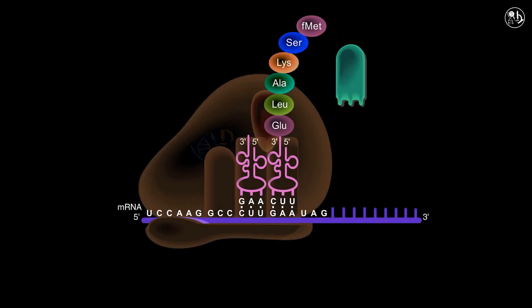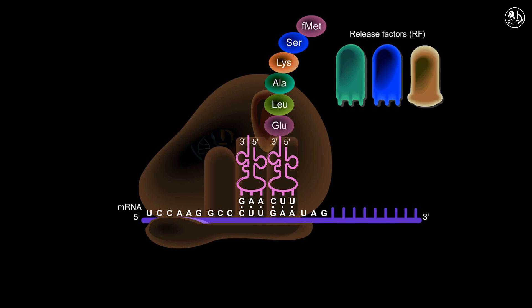Proteins known as release factors, or RF, aid the ribosome in identifying the termination of the polypeptide chain. These RFs interpret the stop codon and trigger a sequence of termination events that are highly specific.